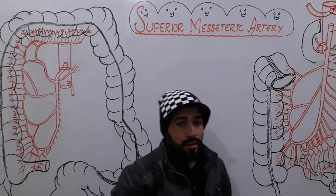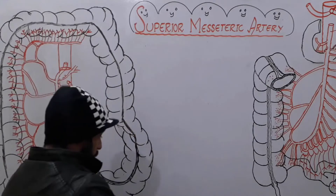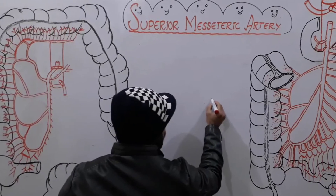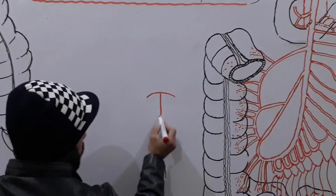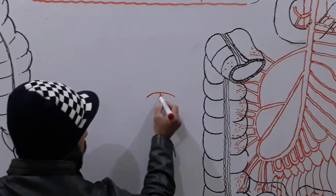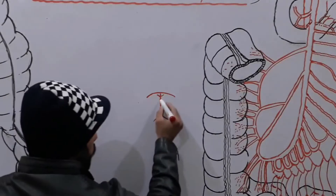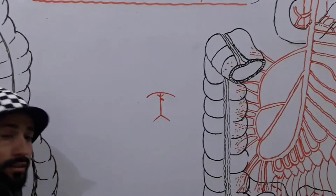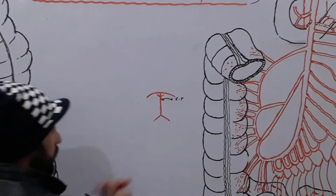First of all we should know what the superior mesenteric artery is. If this is our diaphragm, then beneath the diaphragm there is our abdominal aorta. From the abdominal aorta, first there are two small branches called the inferior phrenic arteries, and then the first big artery which arises is called the celiac trunk.